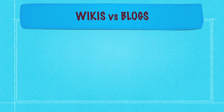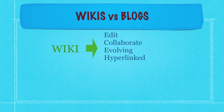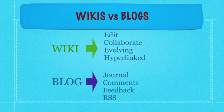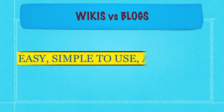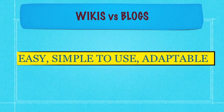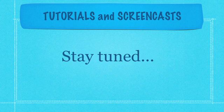So wikis versus blogs: wikis you can edit, collaborate, they evolve over time, and they become hyperlinked. Blogs are more like a journal, where journal writers can receive comments, feedback, and have their comments linked through RSS feeds directly to their email. All these wikis and blogs are very easy, simple to use, and adaptable to however you'd like to use them. For more tutorials and screencasts, stay tuned and come back often to this webpage. Thank you.